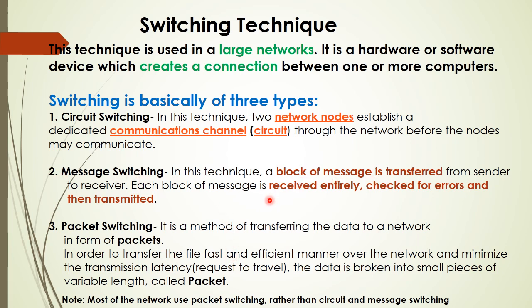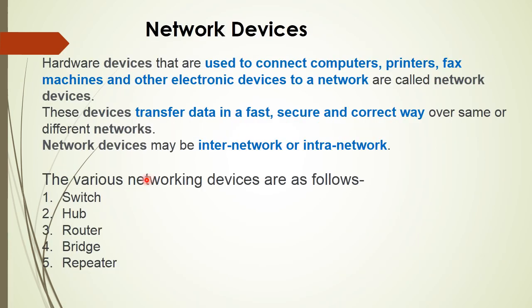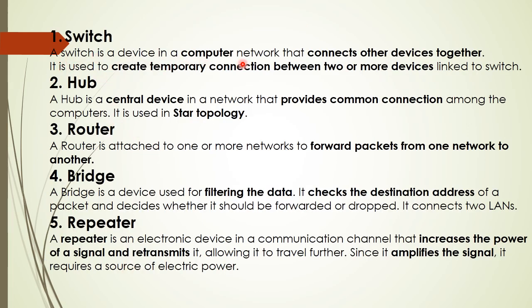Network devices are very important when studying computer networking. Hardware devices used to connect computers, printers, fax machines, and other electronic devices to a network are called network devices. They transfer data fast, securely, and correctly within the same or different networks. The five key network devices are: switch, hub, router, bridge, and repeater.